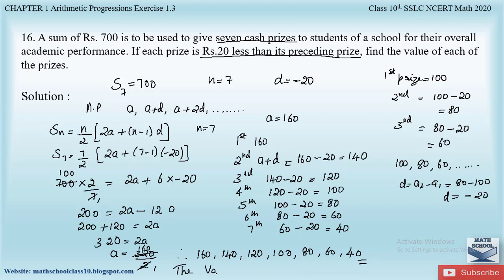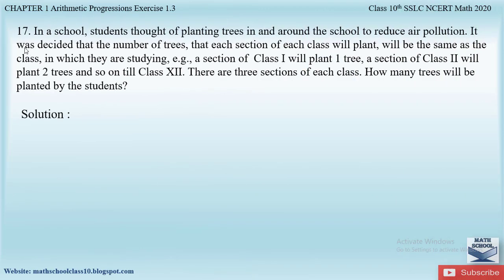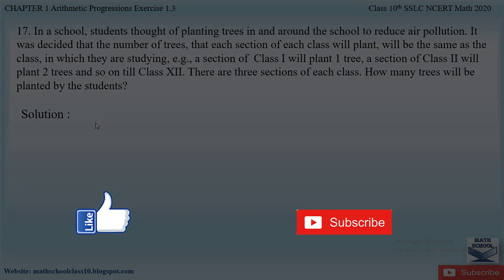So these are the values of the seven cash prizes. If you have any doubts, please comment below. In my next video I will be solving question number 17 from Exercise 1.3, Chapter 1: Arithmetic Progressions. Till then, please like my video and subscribe to my channel. Thank you.